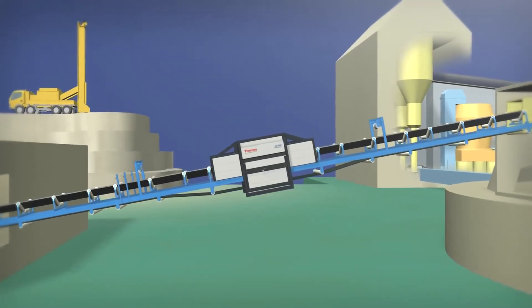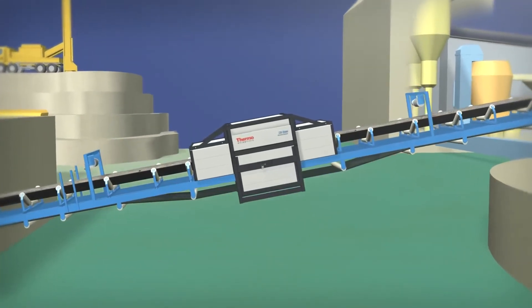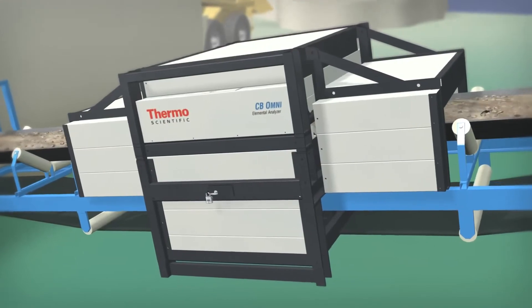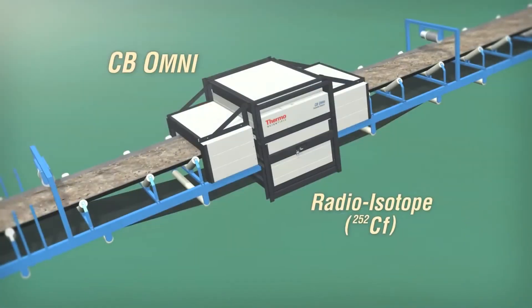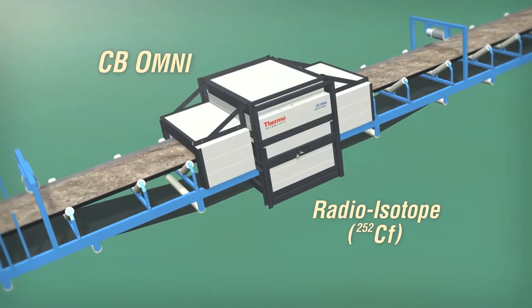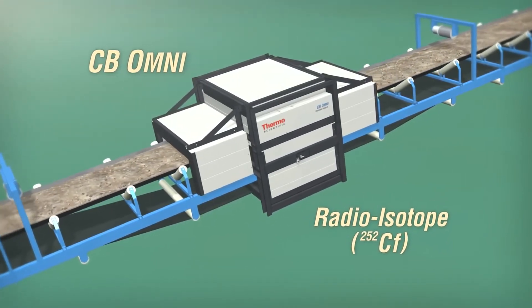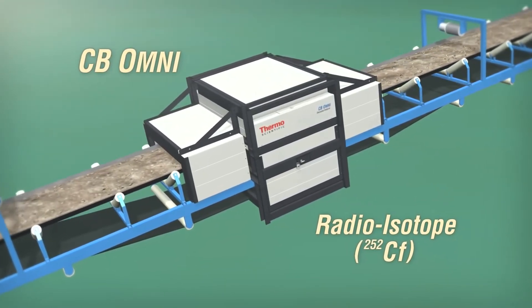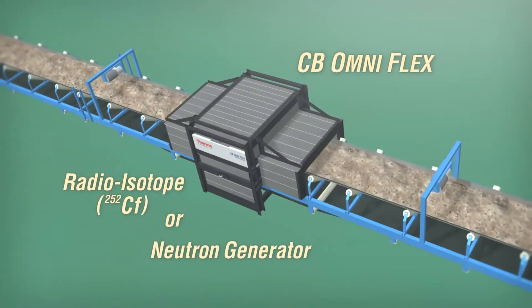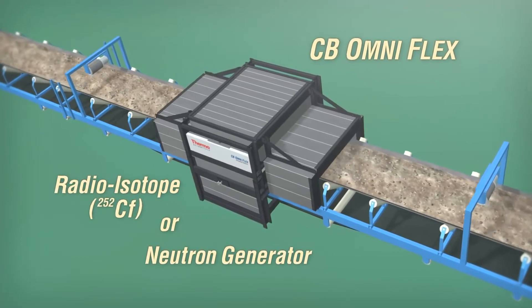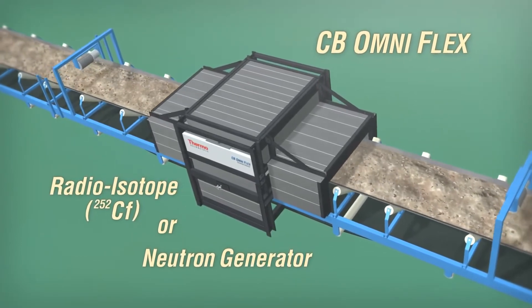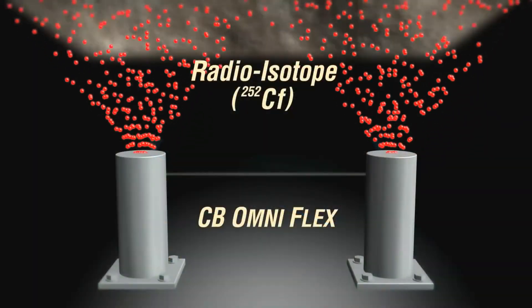Thermo Scientific offers two versions of online analyzer models: the CB Omni and the CB Omni Flex. The CB Omni is designed to use the radioisotope Californium-252 for its neutron source. The CB Omni Flex is a uniquely designed system that has the option to use either the radioisotope or a neutron generator for its neutron source.